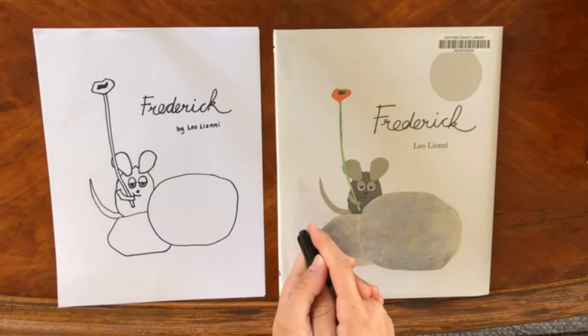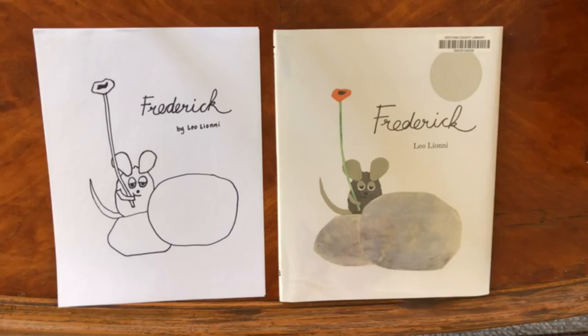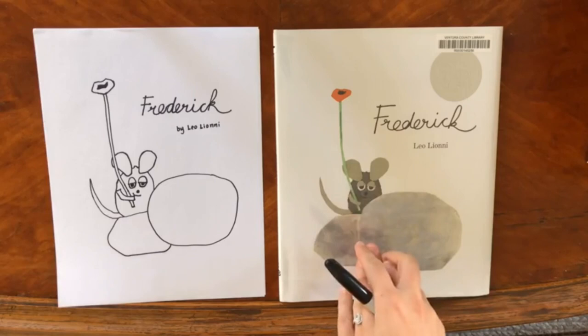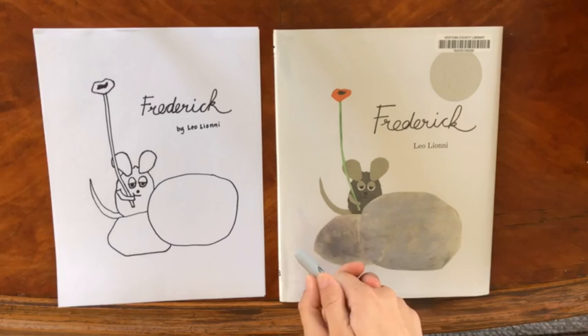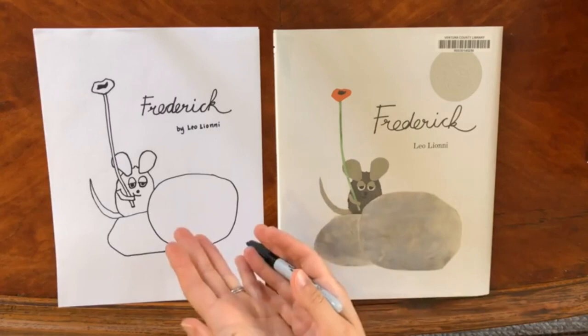Today we are going to be continuing our Leo Lionni characters with Frederick, a very adorable mouse that Lionni illustrated using a layering paper style. It's not necessarily drawn per se. He actually cut out the shapes for this book and for the illustrations and put them together. So it's really sweet and organic, and we're going to translate that style to simple line drawings today.